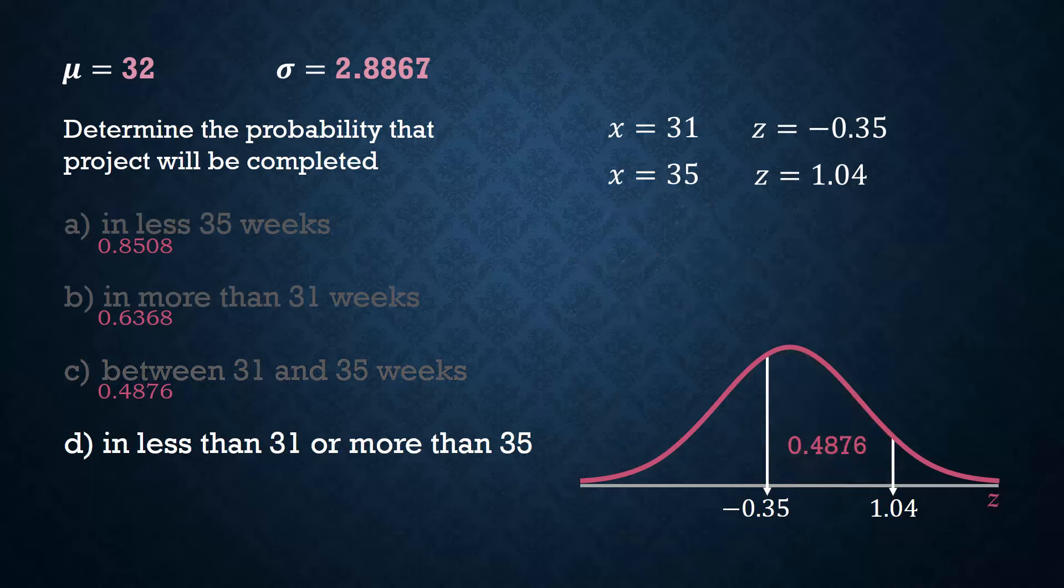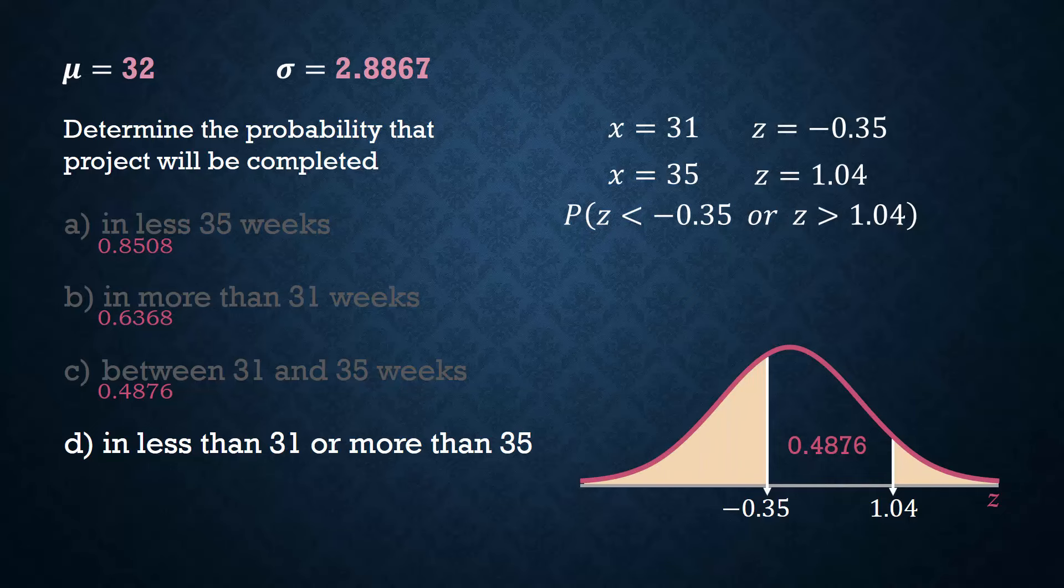For d, less than 31 or more than 35 is the complement of our result in c. So we just subtract the result from 1 to obtain 0.5124.